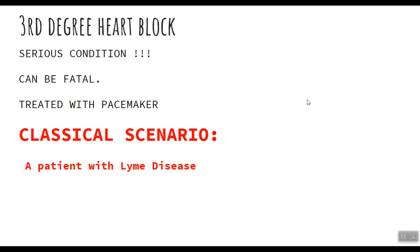Third degree heart block is a very serious condition that can often be fatal, and it is treated with a pacemaker. Watch for a classic scenario involving severe Lyme disease symptoms such as bilateral facial nerve palsy, arthralgia, and target rash — the association between third degree heart block and Lyme disease is very commonly tested.